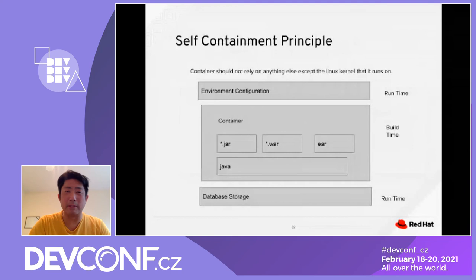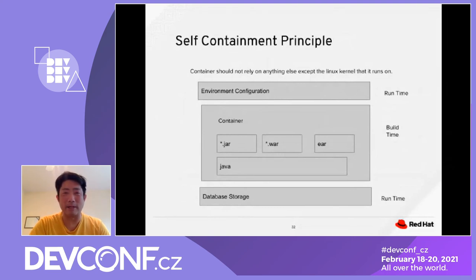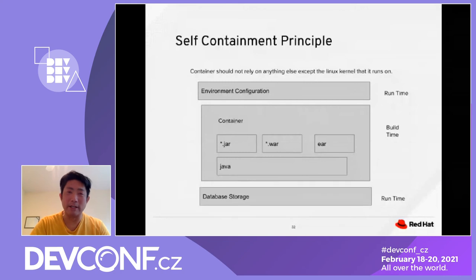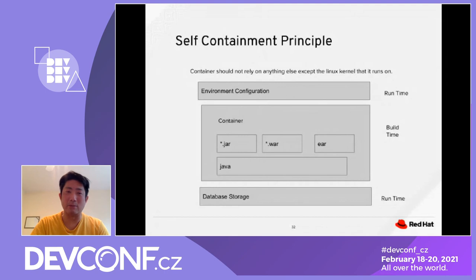Self-containment principle: each container should not rely on anything else except the Linux kernel it runs on. This is related to the Open/Closed Principle in the Java world — you should be self-contained. If container one depends on container two and so on, you are creating additional dependency layers that will cause additional problems. Don't do that.